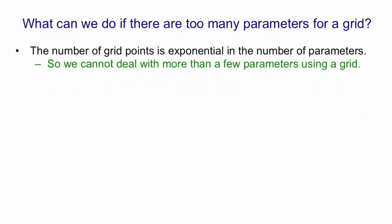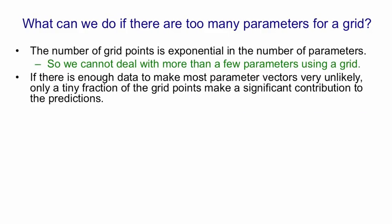The number of grid points is exponential in the number of parameters, so we can't make a grid for more than a few parameters. If there's enough data so that most of the parameter vectors are very unlikely, only a tiny fraction of the grid points will make a significant contribution to the predictions. So maybe we can just focus on evaluating this tiny fraction if we can find it.